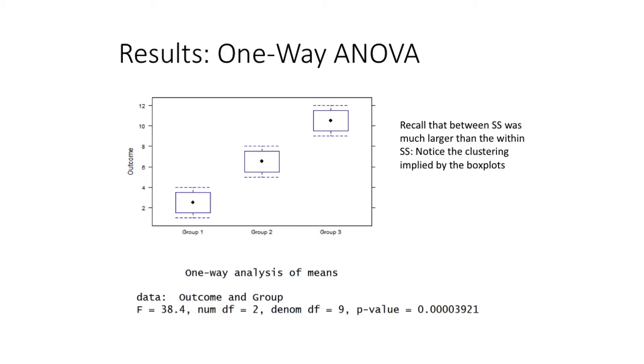This just reflects the graphs that we saw earlier, where for group 1, we have values of 1, 2, 3, and 4. For group 2, we have values of 5, 6, 7, 8. For group 3, we have values of 9, 10, 11, and 12.